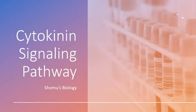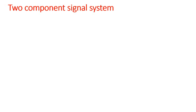Now we are going to talk about the cytokinin hormone signaling pathway. Cytokinin hormone is involved with the process of cell growth instigation. To understand how cytokinin hormone signals, you need to know the two-component signaling system. There are two types I am going to show.